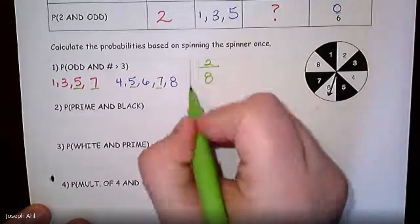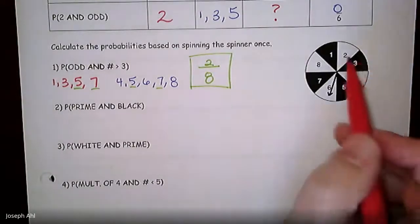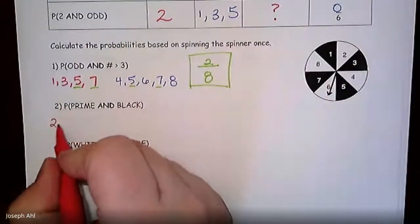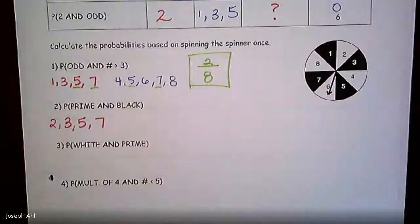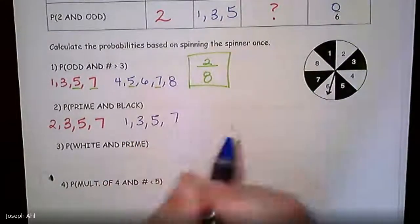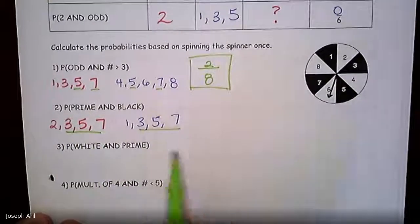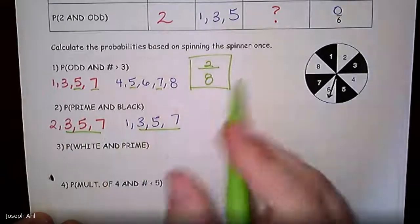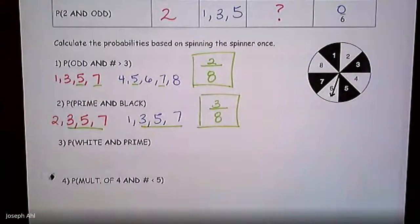Next: prime AND black on the spinner. The prime numbers on the wheel are 2, 3, 5, and 7 — make sure you include 7. The black numbers are 1, 3, 5, 7. There's a lot of overlap here. The numbers 3, 5, and 7 are both prime and black at the same time. So the probability is 3 out of 8.